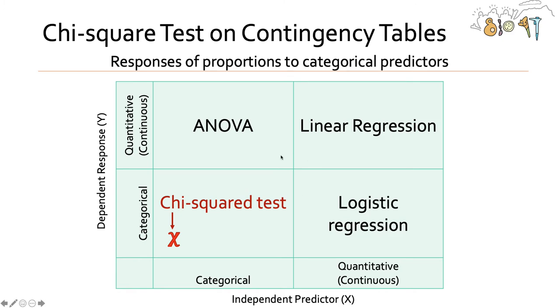Now we're moving along in our tests here and we're at our last one, which is the chi-square test. We use the chi-square test to compare two categorical variables: the categorical independent predictor and a categorical dependent response.